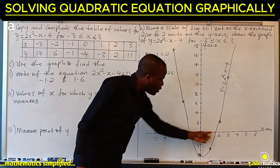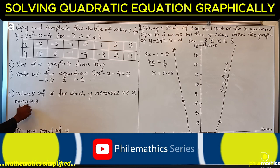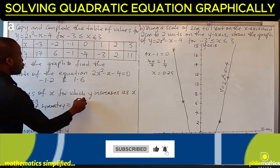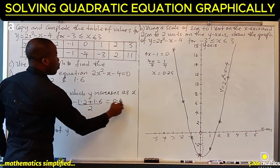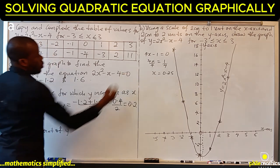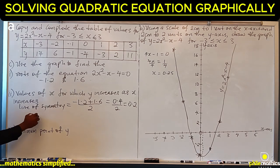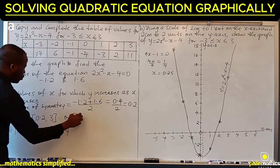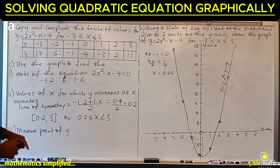Another way to find the turning point is using the line of symmetry: add the two roots and divide by 2. So minus 1.2 plus 1.6 over 2 gives 0.4 over 2, which equals 0.2 — almost the same value we got. Therefore, the values of x for which y increases as x increases are 0.2 ≤ x ≤ 3, where 3 is the highest value in the boundary.